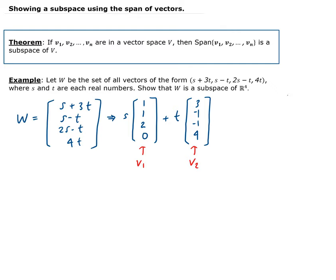So this shows that W is just S times V1 plus T times V2, where S and T are scalars.